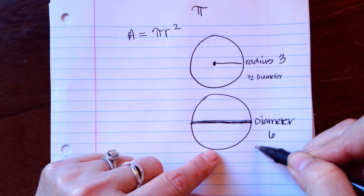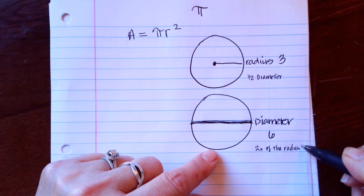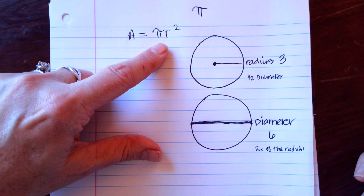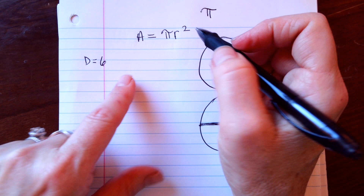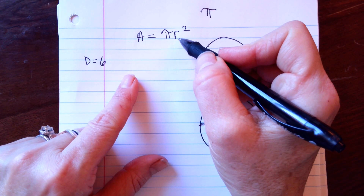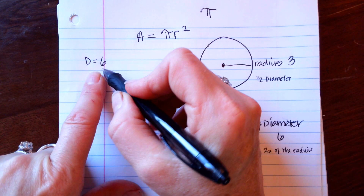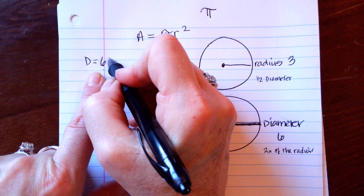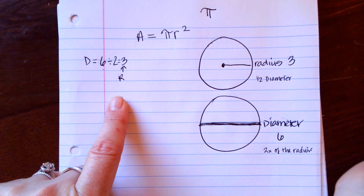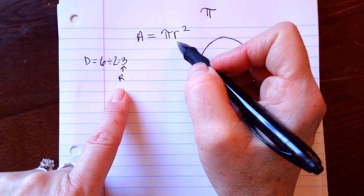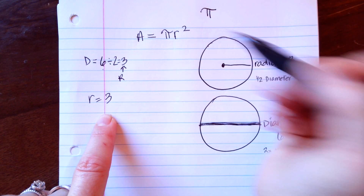The diameter is always two times the radius. So suppose they gave you the diameter and not the radius — say diameter equals six, but you need to find r. You wouldn't use pi diameter squared; you cut the diameter in half: divided by two equals three, and that becomes your r. If they give you the radius, you just plug in the number they give you.